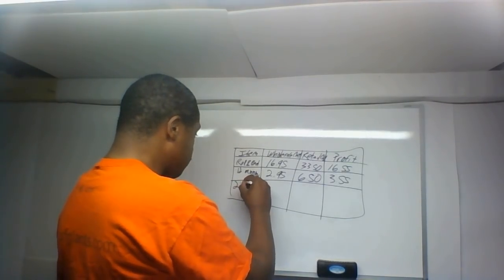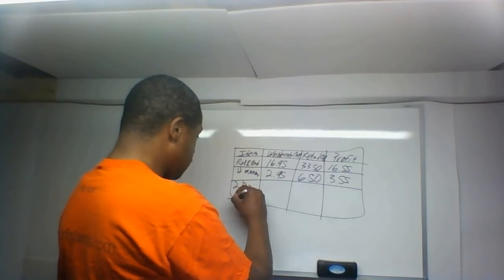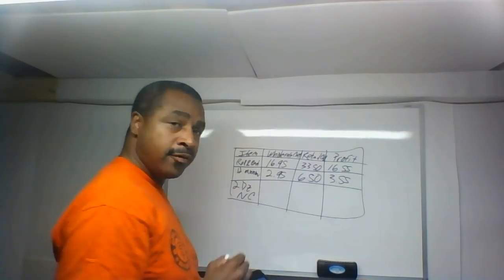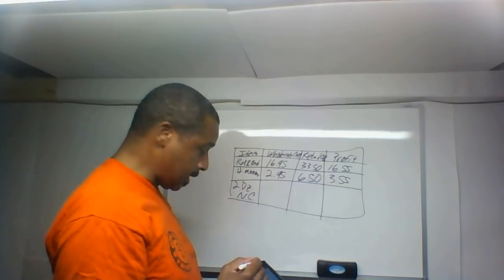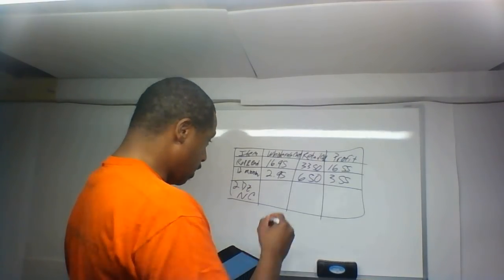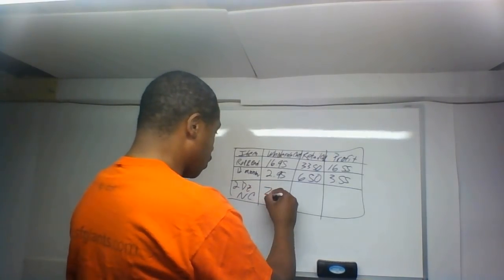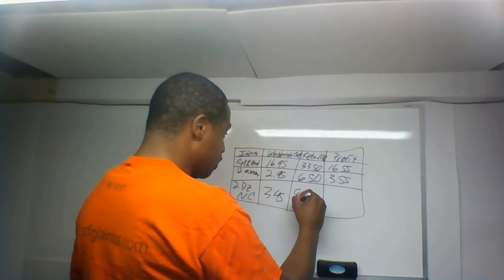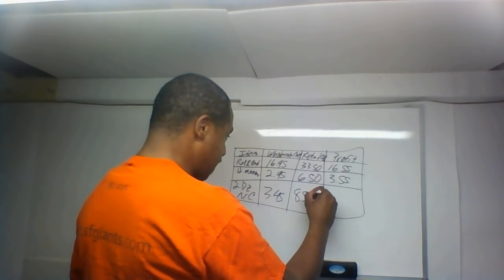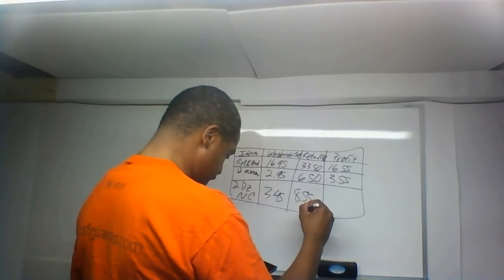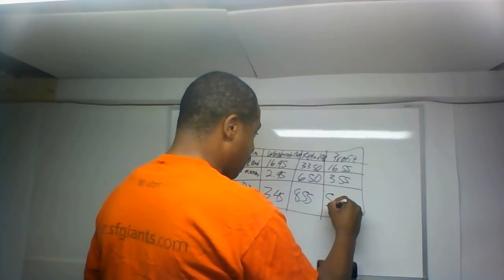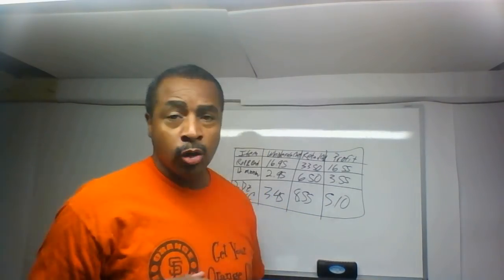Then we have two dozen nightcrawlers — I'll abbreviate that NC. The wholesale cost is $3.45, the retail cost is $8.55, and the profit on that is $5.10.